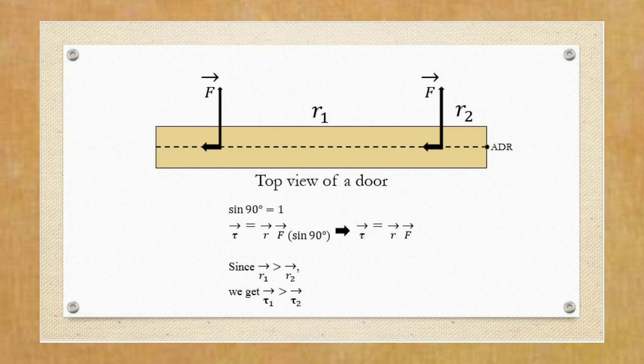Thus, the torque here is equal to r times F, as sin of 90 degrees is 1. With a constant value of F, the torque near the handle is greater than the torque near the hinges. Smaller torque means smaller angular acceleration, thus smaller ability to open the door.